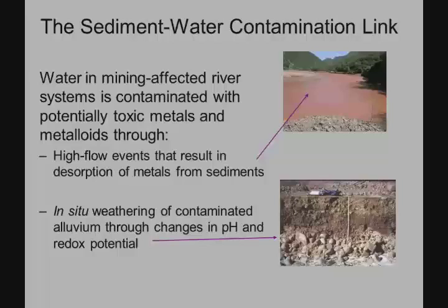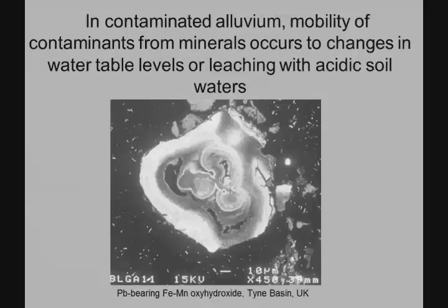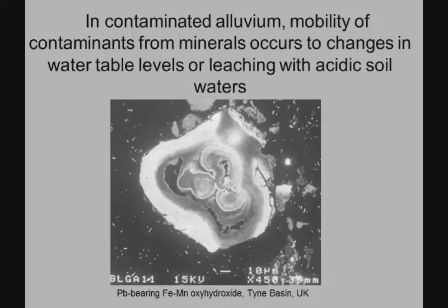Once sediment sits in a floodplain, it doesn't just sit there — it reacts with organic materials and can mobilize through the profile. The good news is that we're finding new minerals form, particularly iron-manganese-bearing minerals that have taken lead into their structure. So even though there's some local remobilization of lead, these minerals form and take it back. In these river systems, we do not see a lot of lead in the water — so the minerals are doing their job very efficiently. Zinc is more of a problem, and the Environment Agency has put quite a bit of money into developing pilot schemes to take that zinc out.